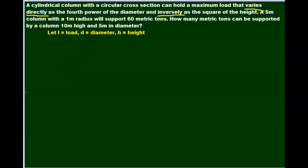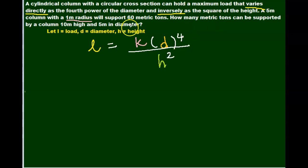Now we have to be very, very careful in this problem because if you notice, we were not given the diameter, but we were given the radius. Bear that in mind when we work out our numbers. So we're told that l varies directly, so it's k d to the fourth power, and inversely, so over h squared. In this first part of the problem, our load is 60 metric tons, so l is 60, k is unknown. Now we're not told what our d is, we're told what our r is. r is 1, so my d is 2, because the diameter is twice the radius, over h, which is 5 squared.